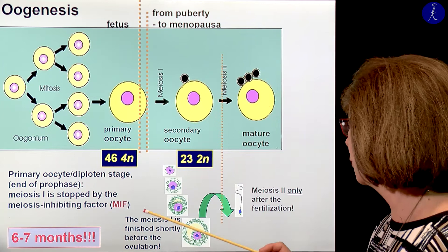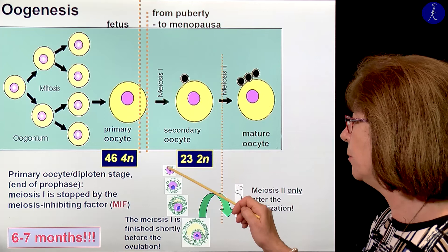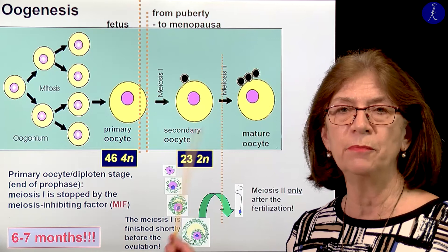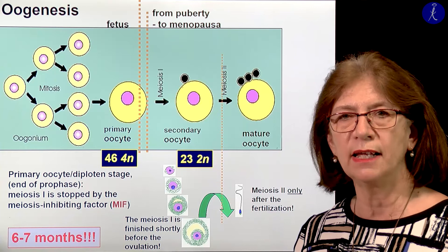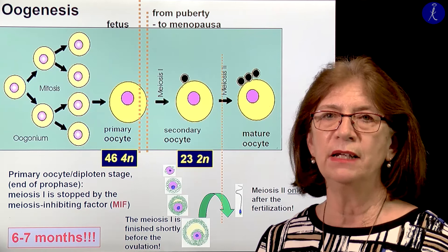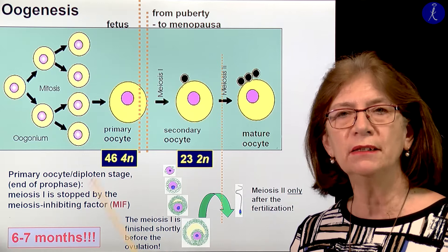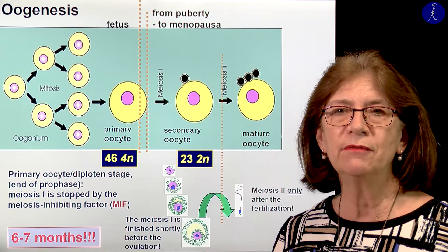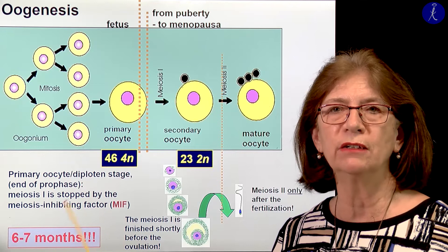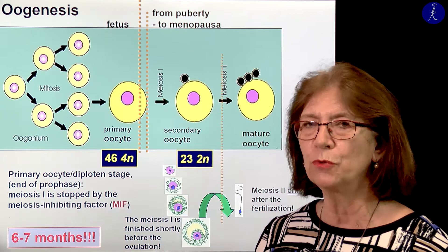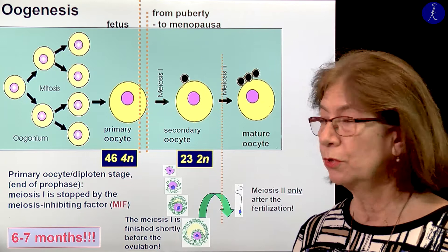This whole process — from the primordial follicle until the ovulation — lasts six to seven months. Don't believe those books where it suggests it happens in 14 days. It never happens in 14 days. If we didn't know it lasts six to seven months, we could never use the technique of in vitro fertilization. This has been known for more than 40 years, but for some reason many histology and embryology books still show drawings which suggest it happens in two weeks — those are incorrect.